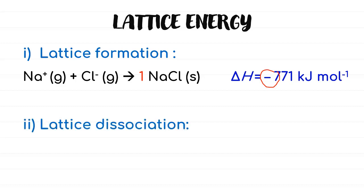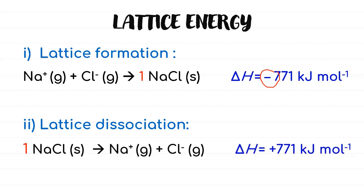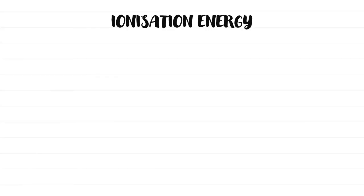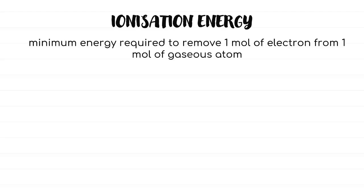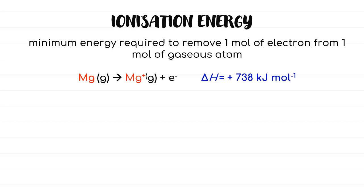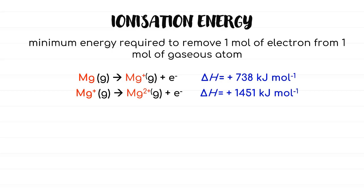Next is lattice dissociation, the one we found in the solutions process. This energy is required to separate 1 mole of a solid compound into gaseous ions and will always have a positive value. Another enthalpy that we need to use in Born-Haber Cycle is ionization energy. It is the minimum energy required to remove 1 mole of electrons from 1 mole of gaseous atoms. Taking magnesium as an example — magnesium has a +2 charge, so it will undergo first ionization energy to form Mg⁺, followed by second ionization energy to finally form Mg²⁺.